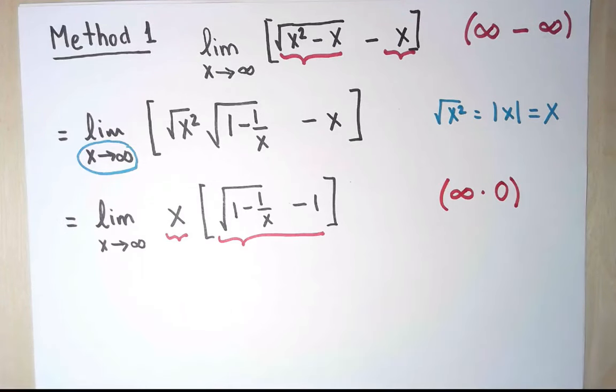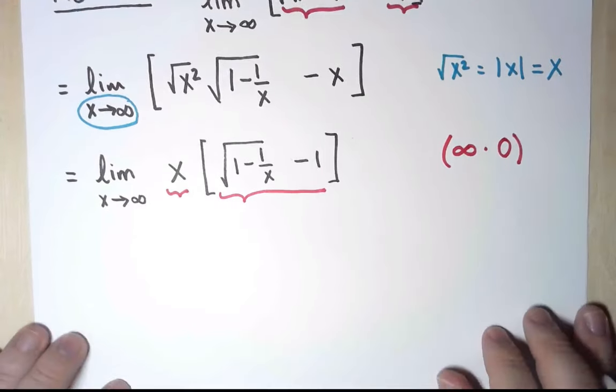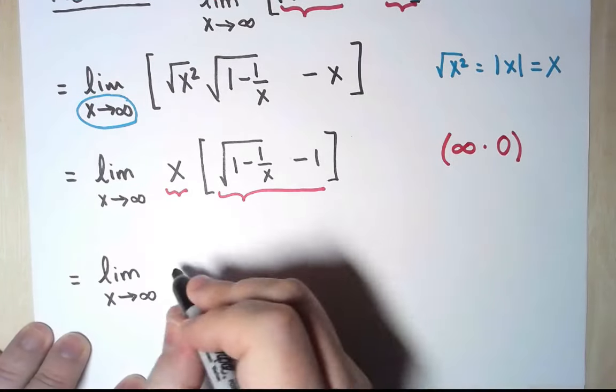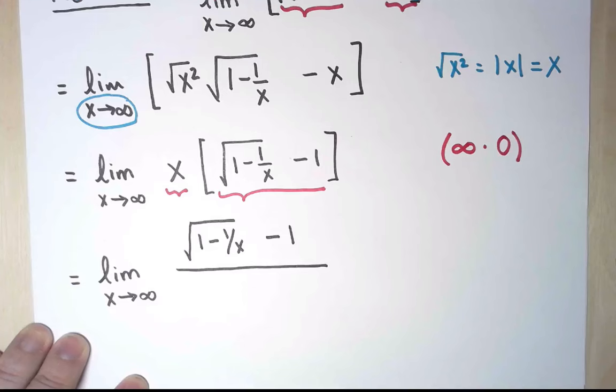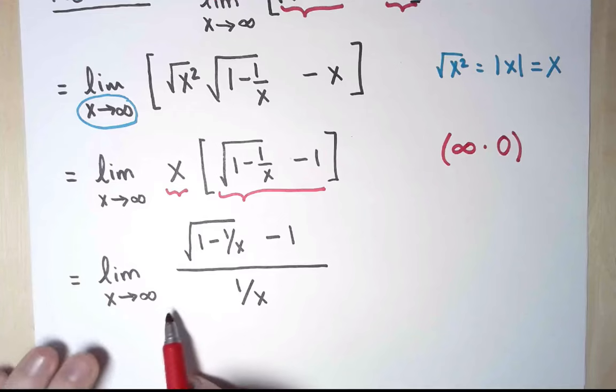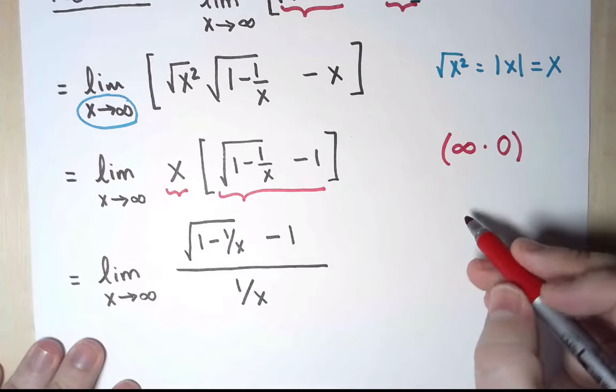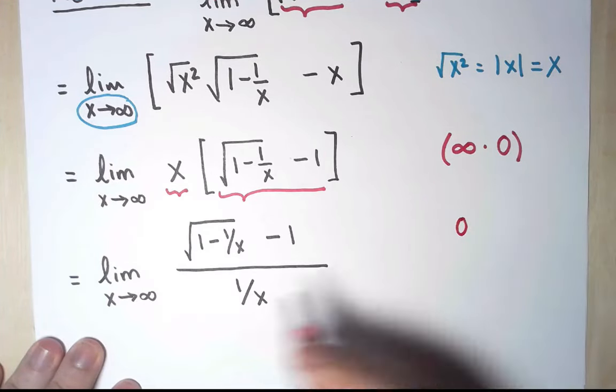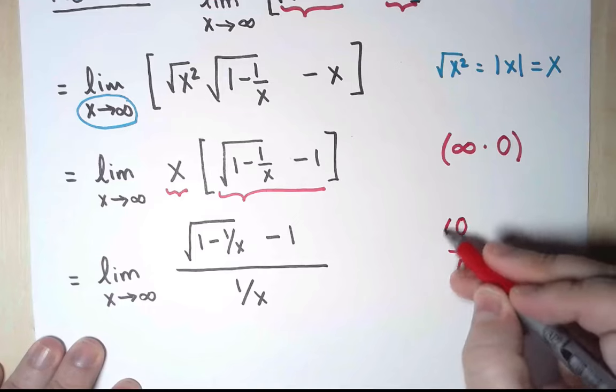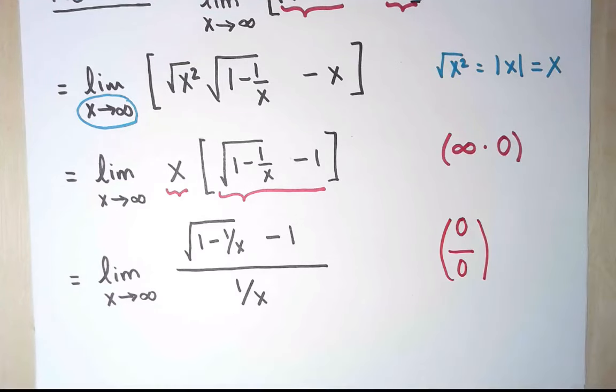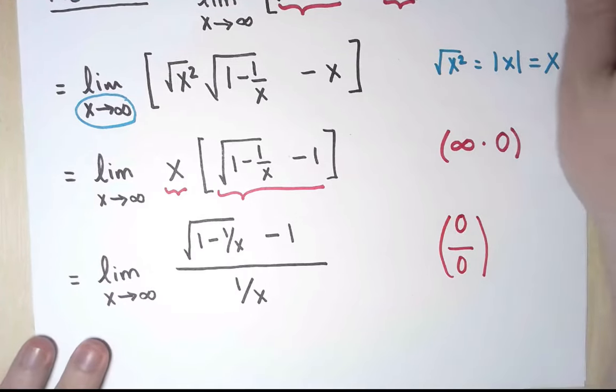I can convert this product into a quotient. Now hopefully this is a quotient where I can use L'Hôpital. Let's make sure. As x approaches infinity, the limit of the numerator is 0. We already knew that. And the limit of the denominator is 0 as well. Perfect. That's the indeterminate form for a quotient, where I can use L'Hôpital's Rule.